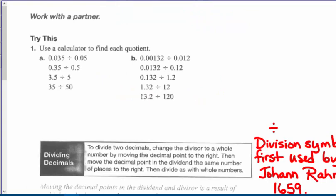You could try this using a calculator to find each quotient. If I move the decimal two places, 3.5 divided by 0.05 gives me seven-tenths. If I move my decimal, 3.5 divided by 5 gives seven-tenths. I don't need a calculator — 3.5 divided by 5 is seven-tenths. Thirty-five divided by fifty is thirty-five-fiftieths, which is the same as seven-tenths.